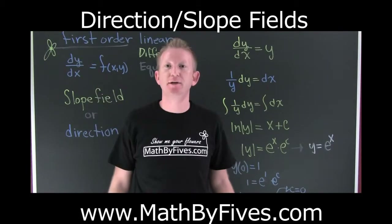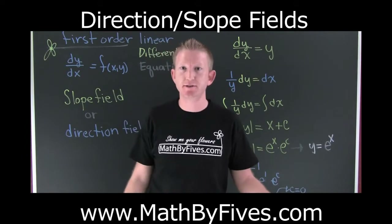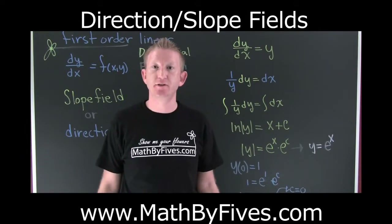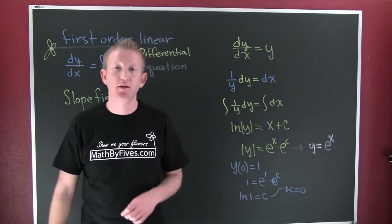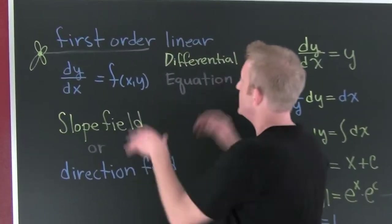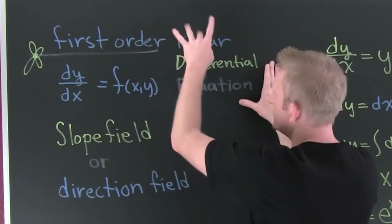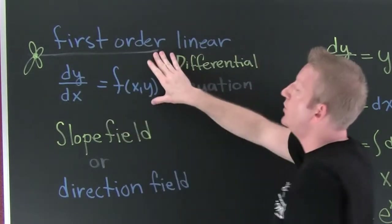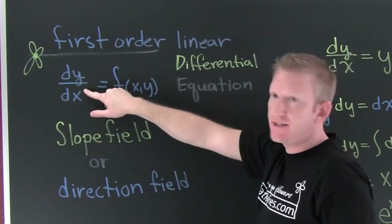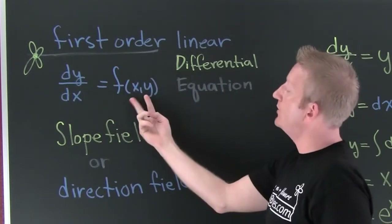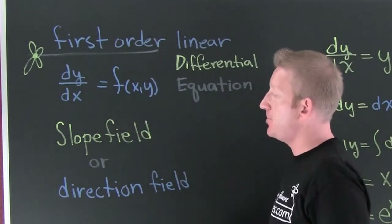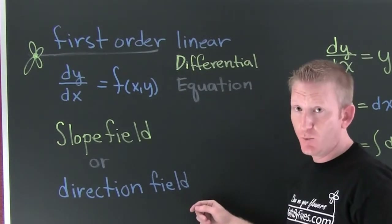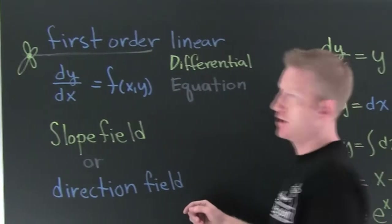This next video in our differential equation series is about slope fields or direction fields. Let's focus on linear first order. A linear first order differential equation can be represented like this. We have this derivative as a function of two variables, and that's going to make a slope field or a direction field. We'll focus on an autonomous one specifically.